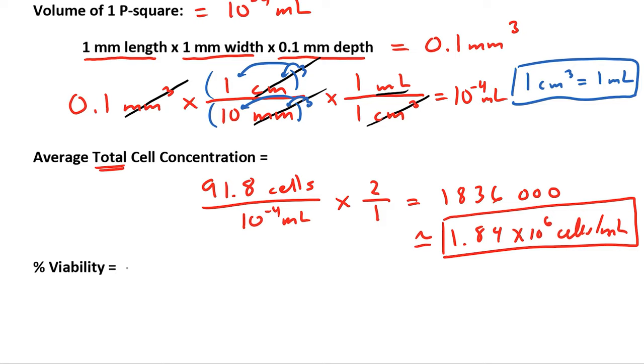We can also calculate percent viability. This is the percentage of cells that are alive. So this is the total number of cells. And the number of live cells on the top. It's a percentage. So you multiply by 100%.